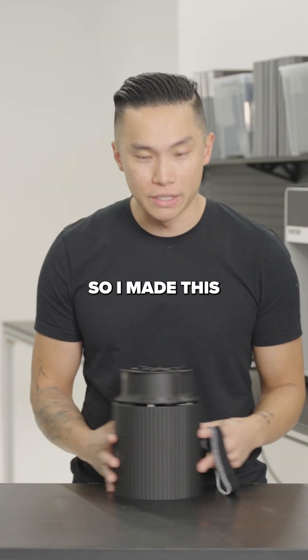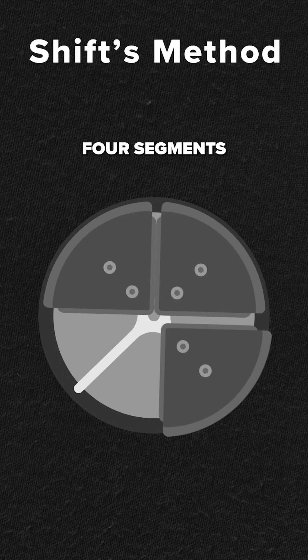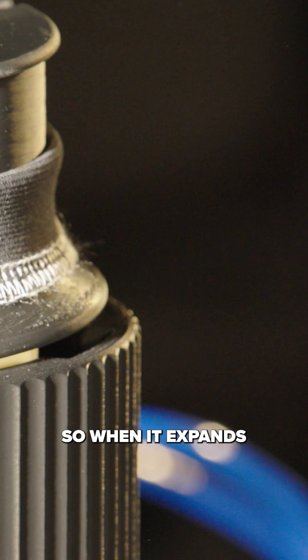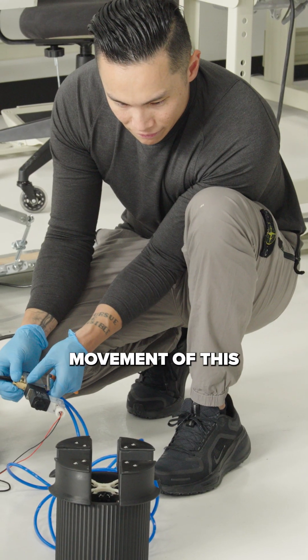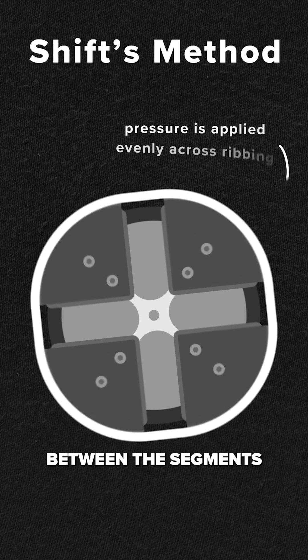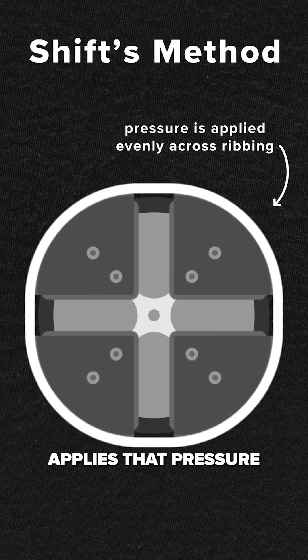So I made this. You see here, there's actually four segments and I've created a nice curve. So when it expands, it allows movement of this ribbing between the segments, so it evenly applies that pressure.